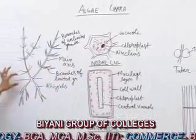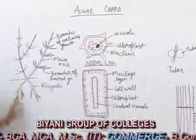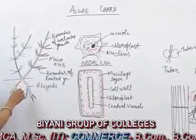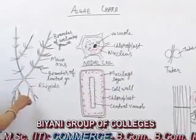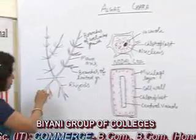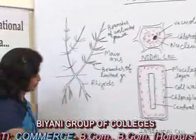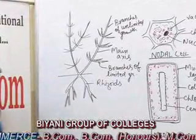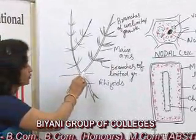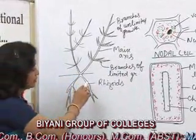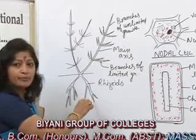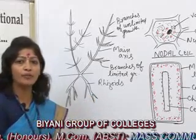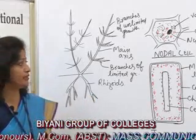Rhizoids are mostly present at the lower nodes, dichotomously branched, and have oblique septa.